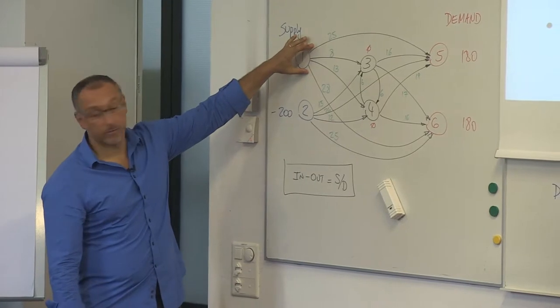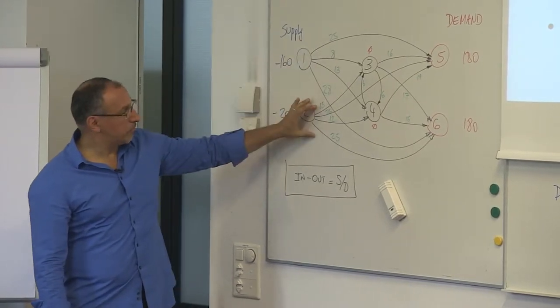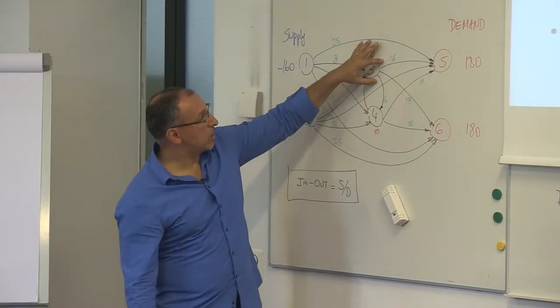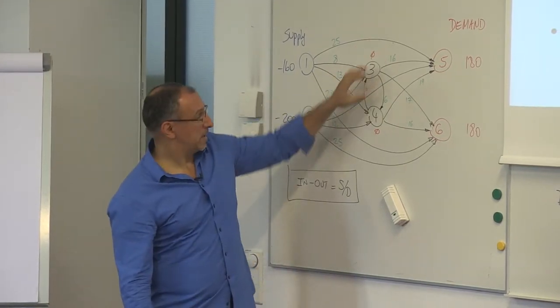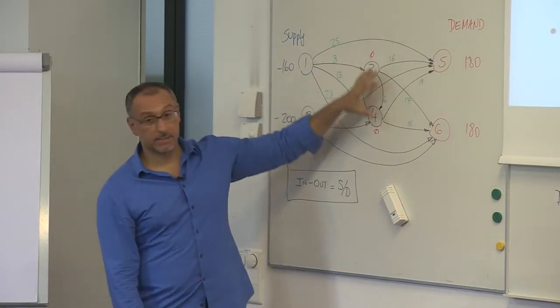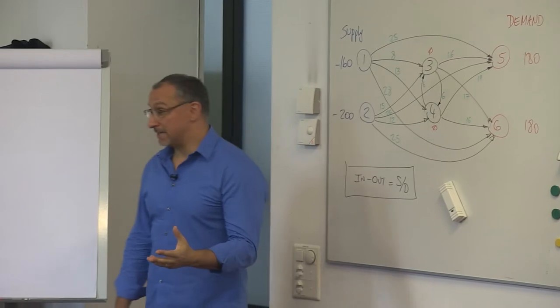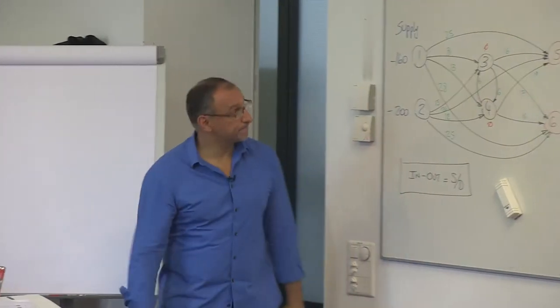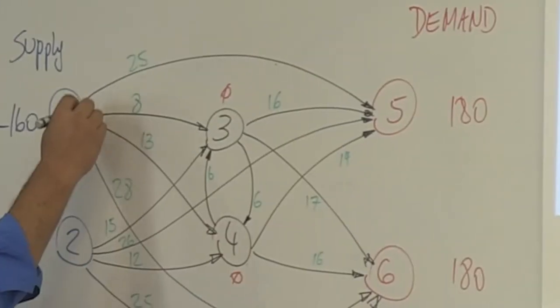So we have four arcs from one, plus four arcs from two, then three arcs from three and three arcs from four. Four and four is eight, plus six is fourteen. Now we should name all of them.